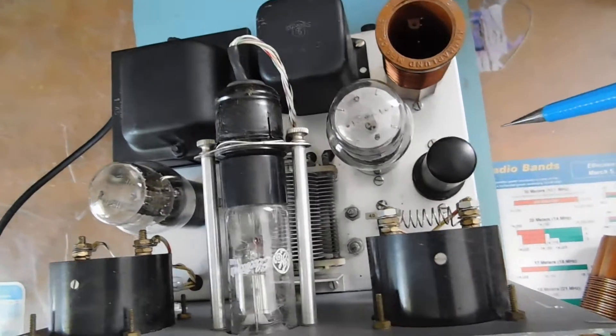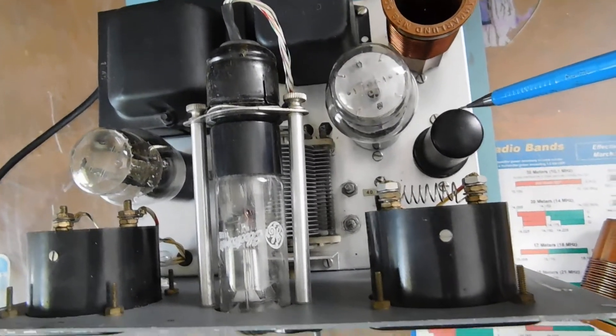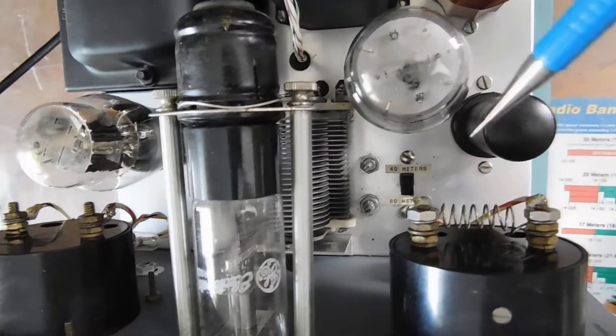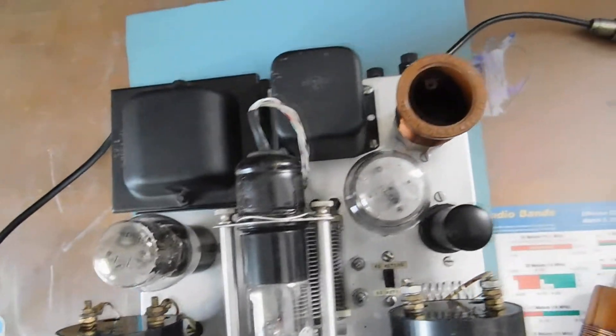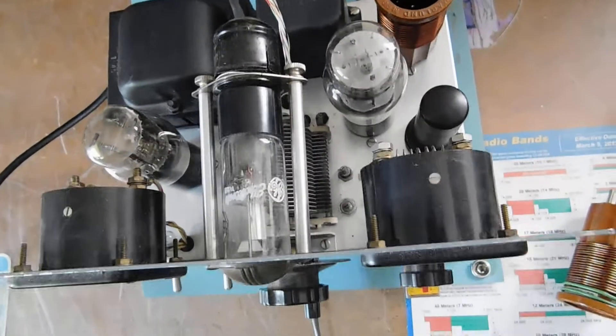6L6, 6AG7. Nice homemade wound current meter shunt here. All on a very nice chassis.